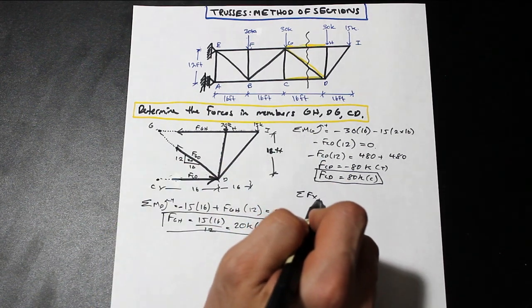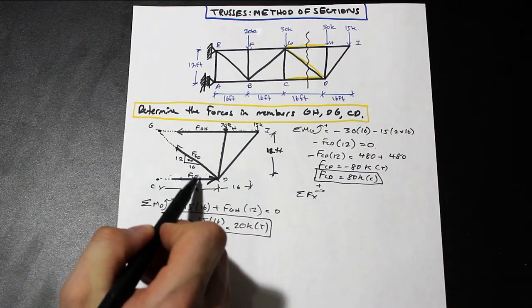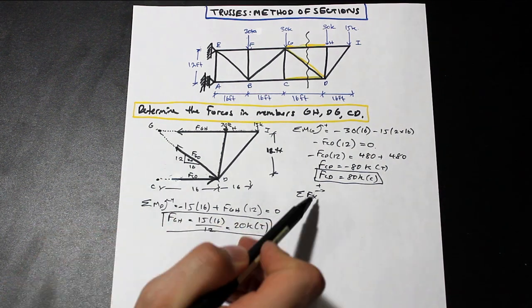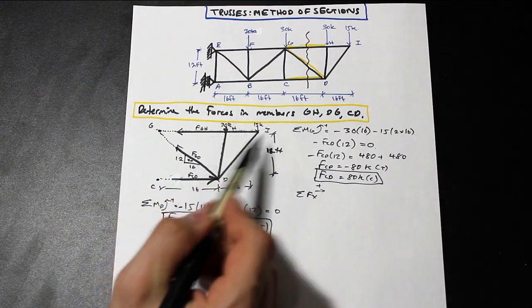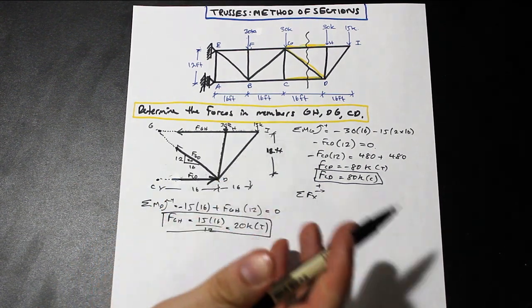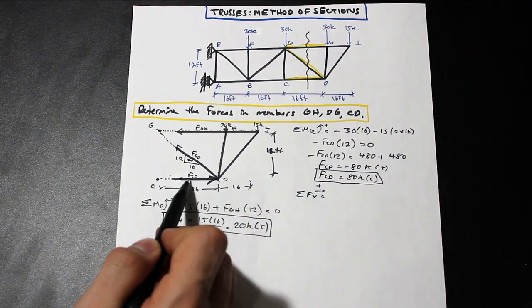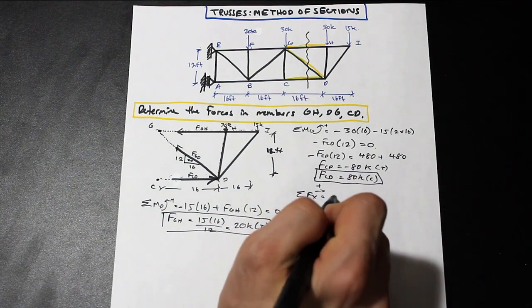So what do we have in the X direction? Well, we have FCD, and you can choose X or Y, but choose the easier one. Choose the one where we only have, for example, three forces or something like that. So we have, let's take a look at our X direction. So we have FCD. FCD is 80 kip. That's to the right. Remember, we changed the arrow, so that's positive. We have FGH. That's in the negative direction.